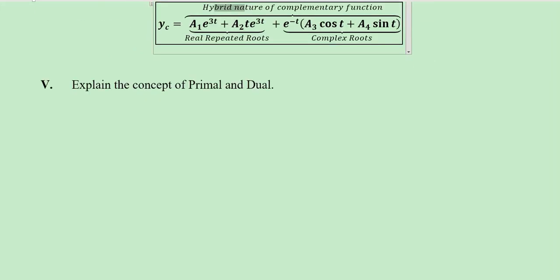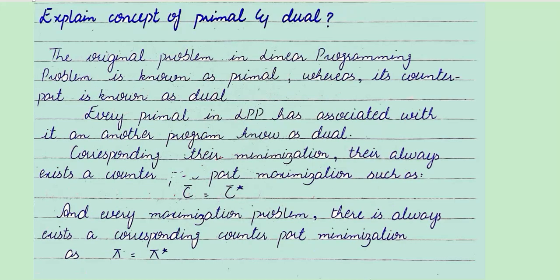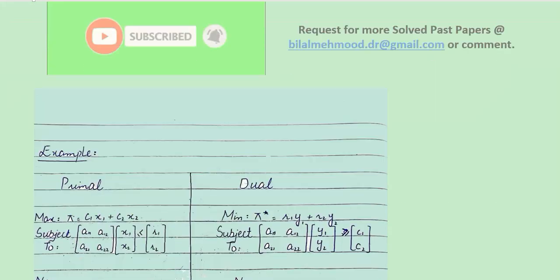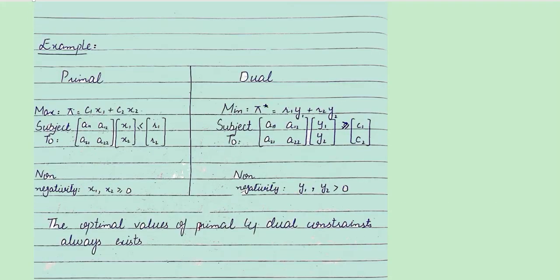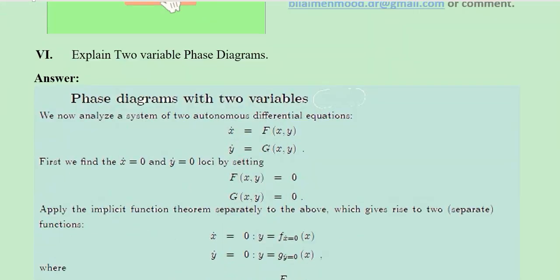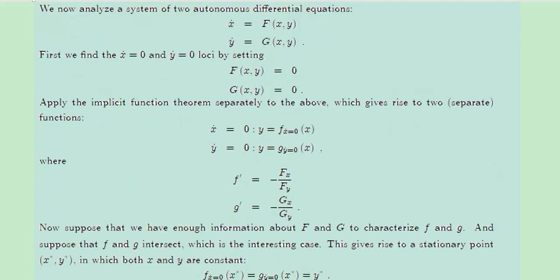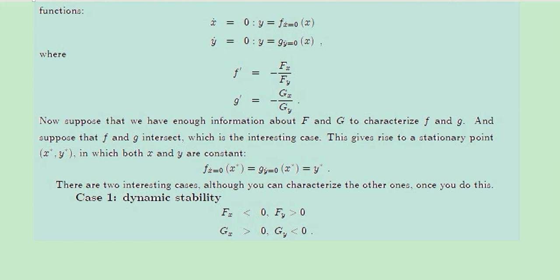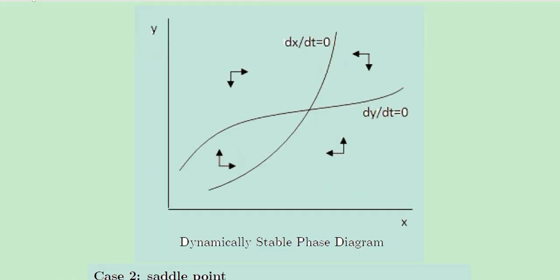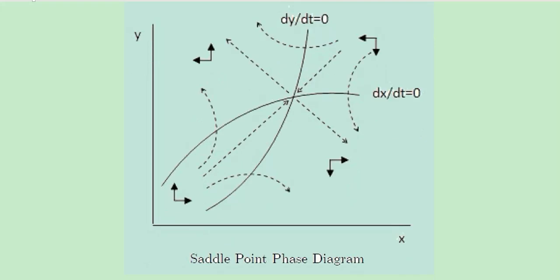The fifth part of the short questions is about the theory of primal and dual. The theory is written here — you can pause the video and read it. A couple of examples compare primal and dual, and duality theory is also explained. The sixth part is about the theory of two-variable phase diagrams, covering dynamic stability with its graph, and the saddle point with its conditions and diagram.